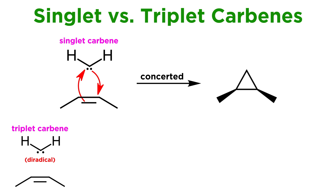But triplet carbenes do not have a lone pair — they are diradicals, meaning they have two unpaired electrons. As such, they participate in stepwise radical additions, in stark contrast with the concerted reactions of singlet carbenes.